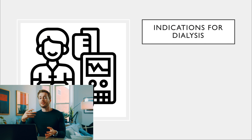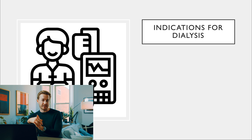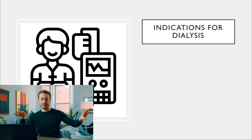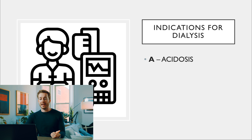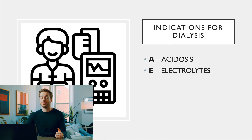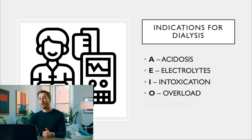The next mnemonic covers indications for dialysis: AEIOU — the vowels. A is acidosis (significant), E is electrolytes, I is intoxication, O is overload (fluid overload), and U is uremia. These apply when someone is so sick their kidneys need outside help filtering the blood.